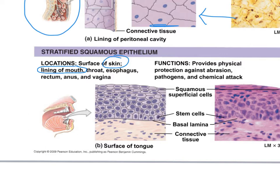The top layer of your skin and the lining of your mouth are constantly sloughing off. That's where regeneration comes in — the bottom layer goes through mitosis, one daughter cell stays in that lower layer, and the next daughter cell gets pushed up, pushing all other cells toward the surface. You're constantly regenerating that epithelium. Other passageways like the throat, esophagus, rectum, anus, and vagina also have stratified squamous due to friction and secretions.